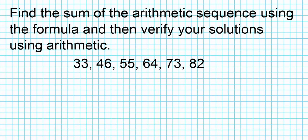We're going to be taking a look at two examples in this clip. First one: find the sum of the arithmetic sequence below using the formula, and then verify your solution using arithmetic. The first thing we're going to do is write down the formula: S sub n equals n over 2 times a1 plus a sub n.